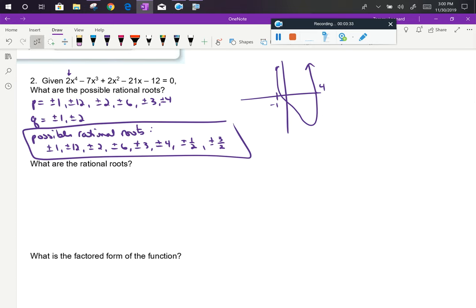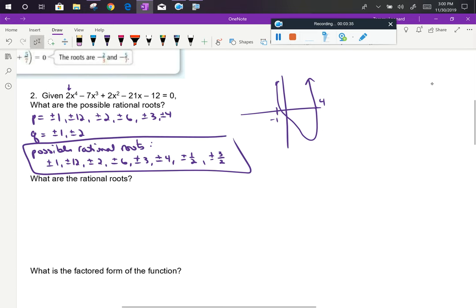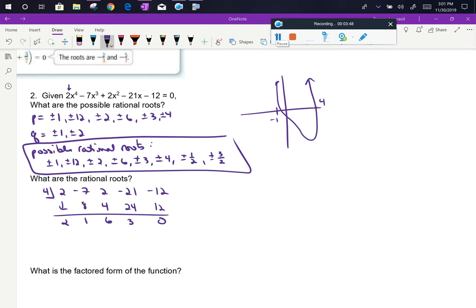So I'm going to start with 4 because starting with my easiest integers is the easiest place to begin for my synthetic division. So doing my synthetic division I can see that I do get a remainder of 0 so I have confirmed that x equals 4 is in fact one of my rational roots.